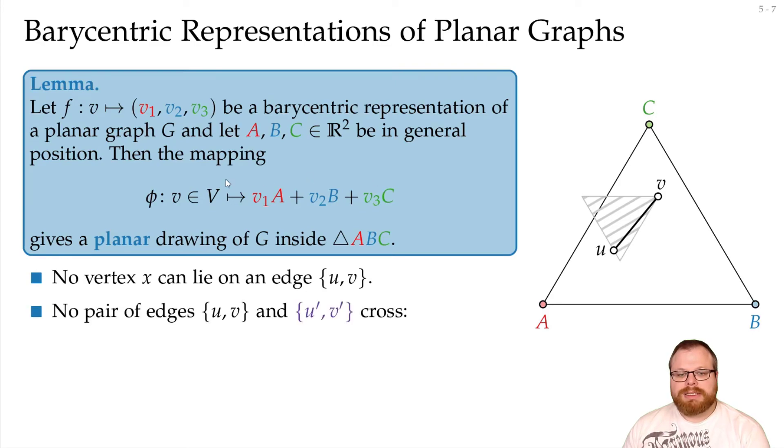Second, let's say we have a crossing between uv and u prime v prime. Then, we can see here that one of the vertices has to lie in the forbidden triangle of the other. Now that we want to formalize a bit more.